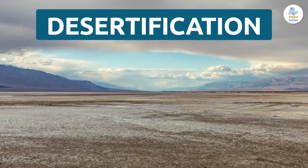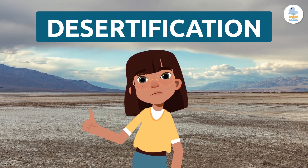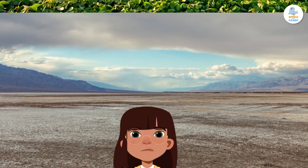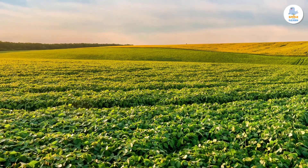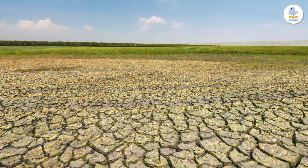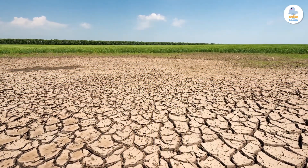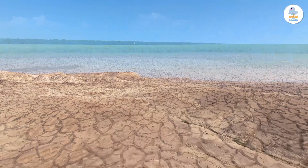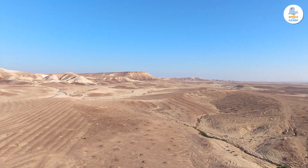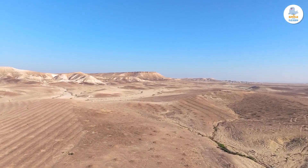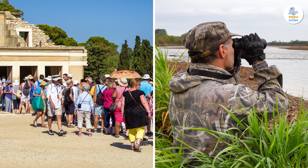The disappearance of forests, together with climate change and overpopulation, leads to a phenomenon called desertification. Desertification happens when lands that were once fertile become barren and plants can no longer grow, turning them into desert-like areas. We must stop this.